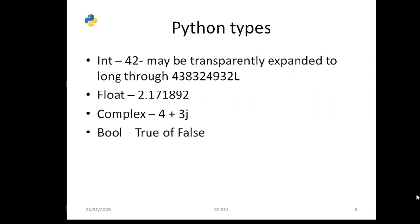Python numeric types include: integer (e.g., 42), float (e.g., 2.17), complex (e.g., 4+3j — useful for mathematical complex operations), and boolean (True/False — just like binary, where True and False are the two values).